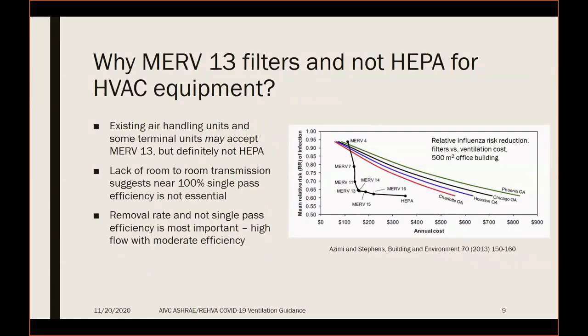Why MERV-13 filters? Practically, recirculating systems may be upgradeable to MERV-13 but not to HEPA, which is an expensive direction. The lack of evidence of room-to-room transmission suggests we don't have to capture all infectious aerosol on a single pass — removal rate based on recirculation rate combined with filter efficiency seems most important. A study by Zemi and Stevens on influenza risk found that MERV-13 was the optimal point in a typical North American system and resulted in much lower energy use and cost impact than increasing ventilation to achieve the same outcome.